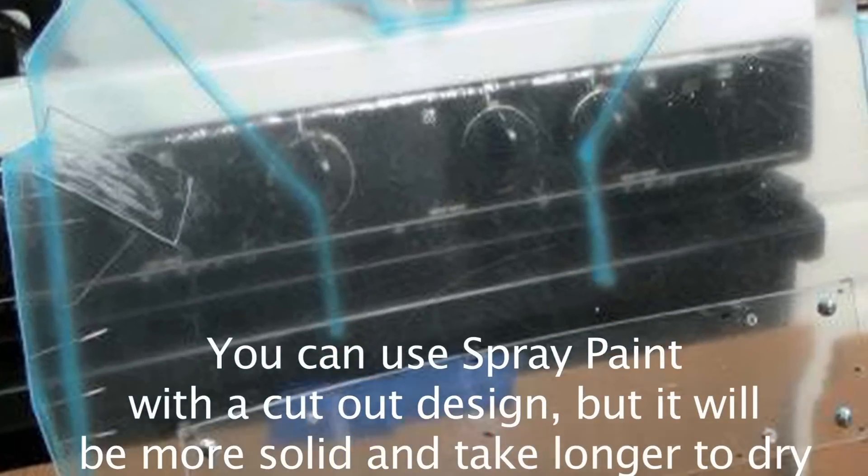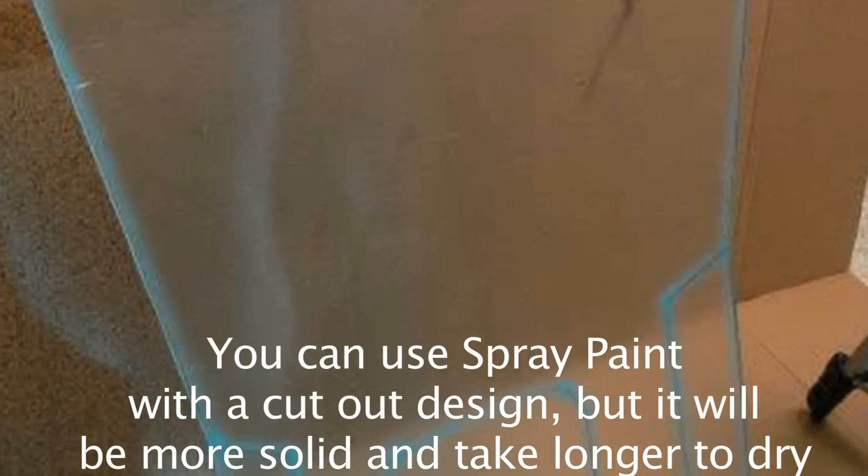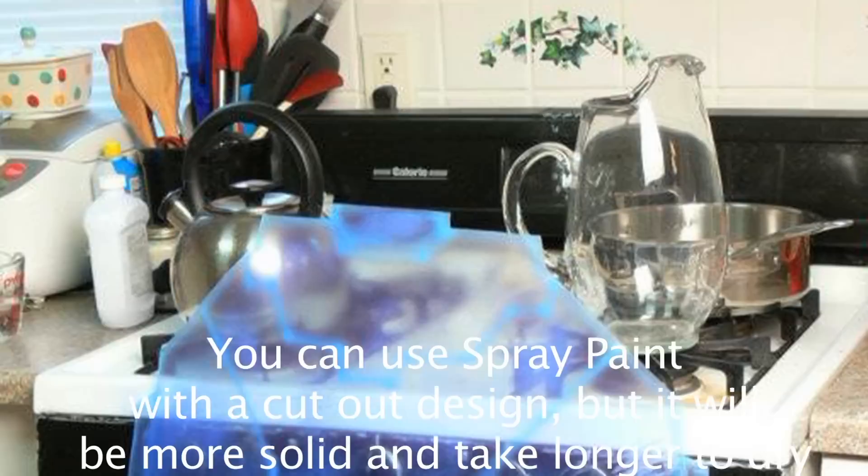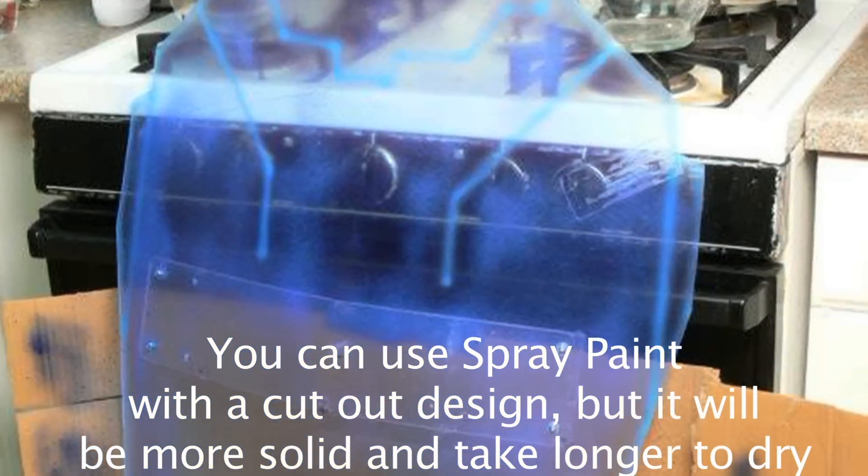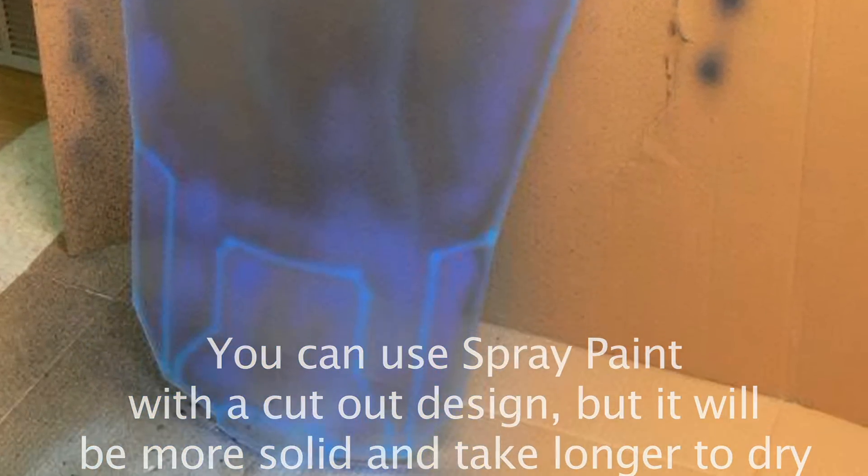And then from there I used airbrush to airbrush the detail lines on the back of the plexiglass. That didn't take very long at all. And then on the front I used the darker color which is what I wanted the whole shield to actually have the color for.